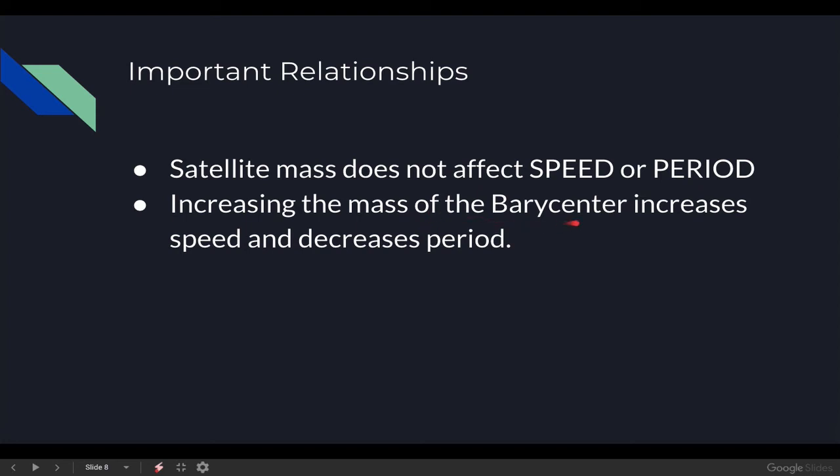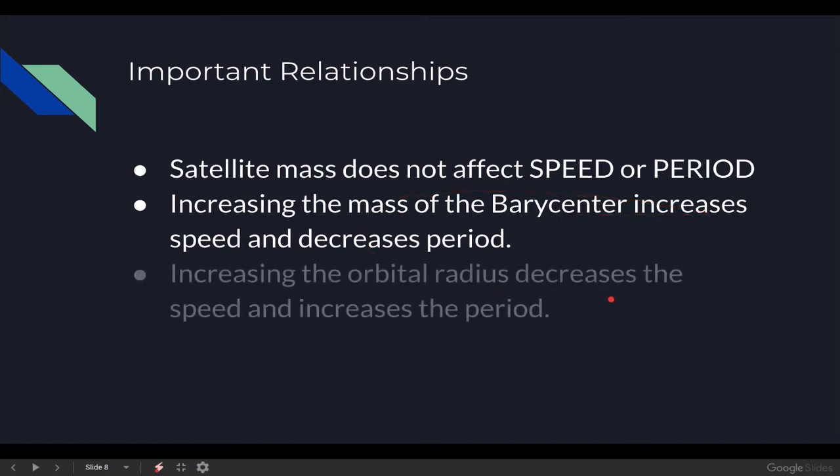Increasing the mass of the object being orbited, it doesn't really make sense to increase the mass of the barycenter, but the object being orbited increases the speed and decreases the period. Increasing the orbital radius decreases the speed of a satellite and increases the period.